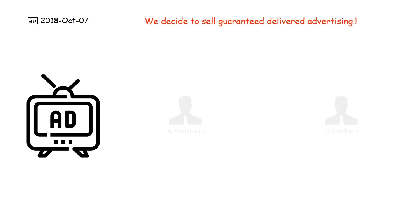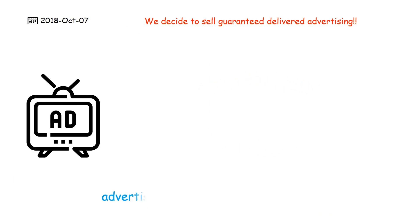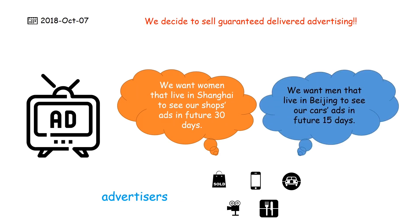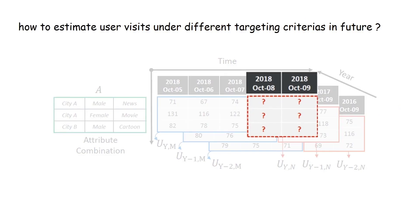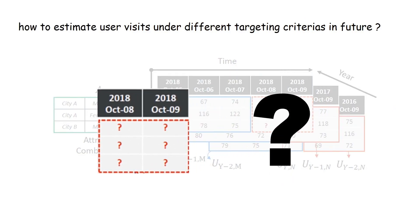One day, we decided to sell guaranteed delivered advertising. Advertisers name a targeting criteria, and publishers sell user visits with guarantee in advance. Here are some advertisers: an e-commerce company wanted women in Shanghai to watch their shop ads in the future 30 days, while another company aimed at men in Beijing. How shall we accurately estimate the number of users under different targeting criteria?